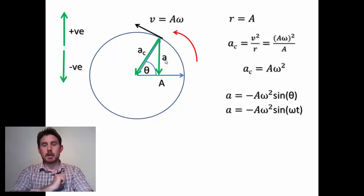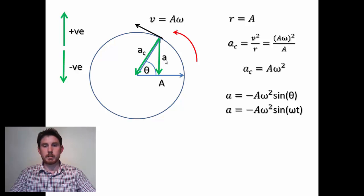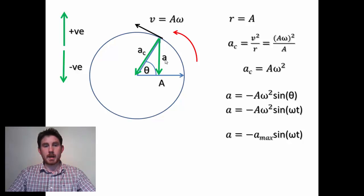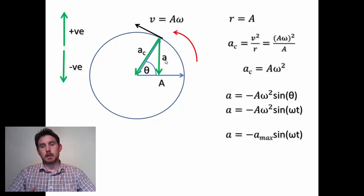We can substitute in theta equals omega t, which gives us another option for an equation. If we know the maximum acceleration — that would be when the object is at its uppermost position where acceleration is maximum in the downwards direction, or at its very bottom position where it's at maximum positive value — we could use the equation: acceleration equals negative maximum acceleration times the sine of omega t.